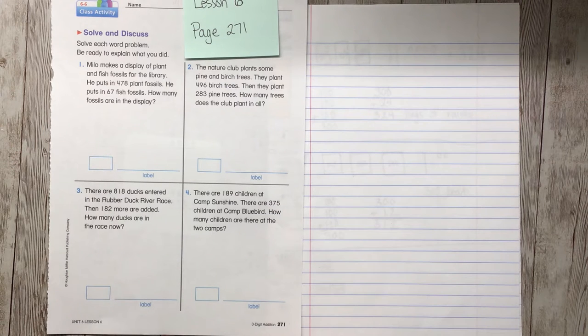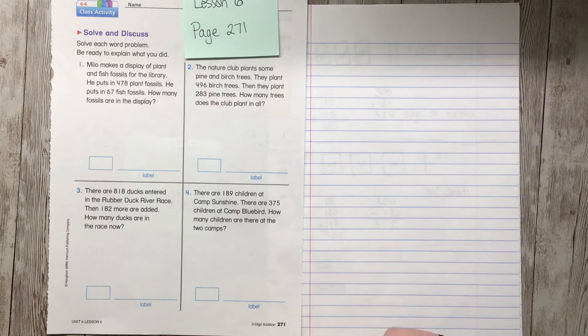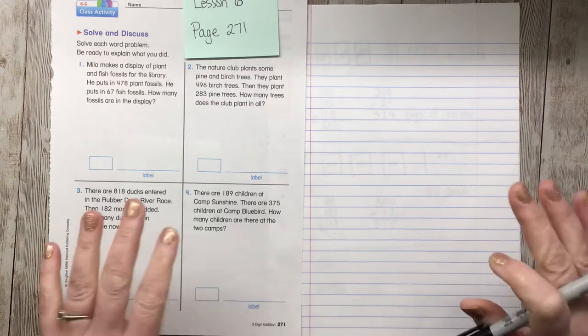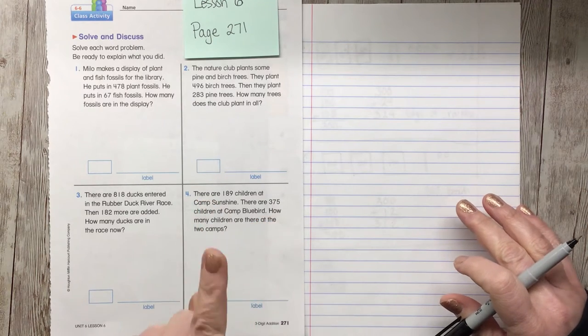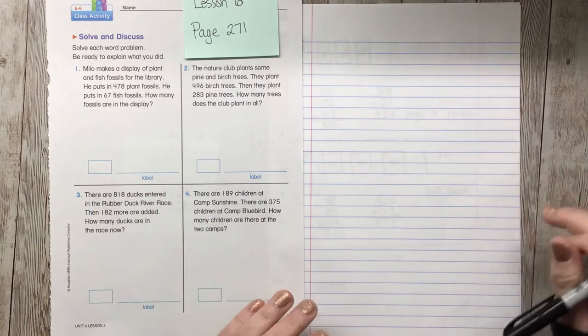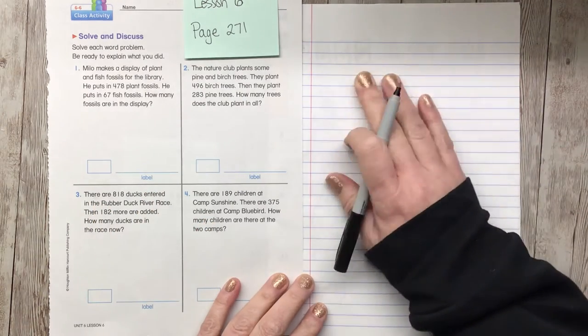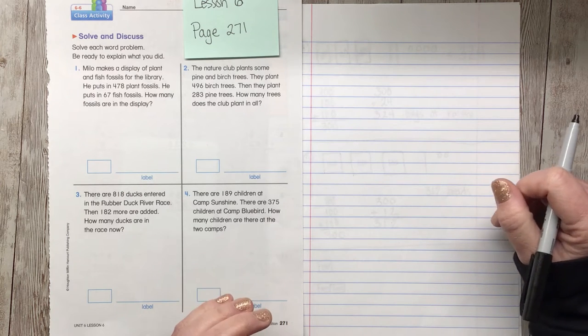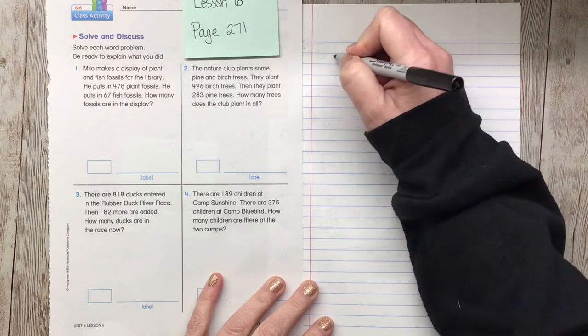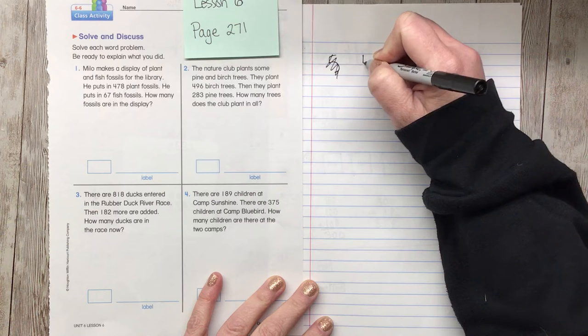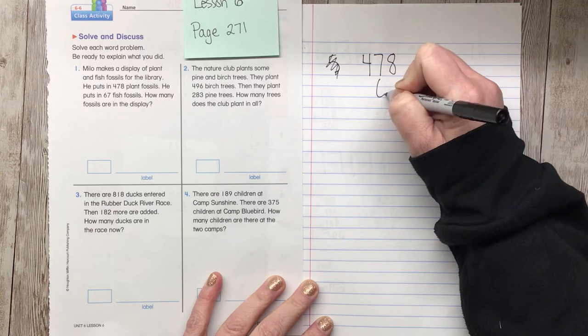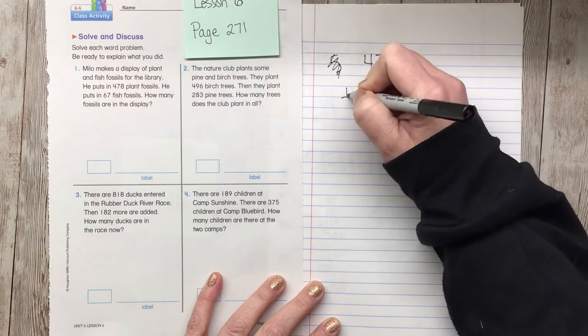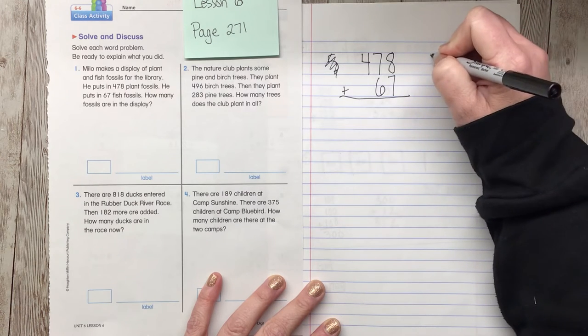So, Milo, number one. Milo makes a display of plant and fish fossils for the library. He puts in 478 plant fossils. He puts in 67 fish fossils. How many fossils are in the display? All right, so what I'm going to do is I'm going to do two things at once. We have done this before. It was back in November when we were adding with regrouping. We would draw a picture right next to it, so we're going to do the same thing as that right now.